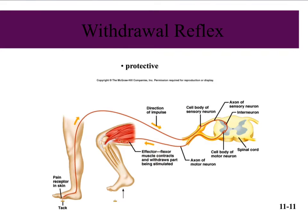Here is another example of a withdrawal reflex. They're designed to protect us from tissue damage. We see a sensory receptor in the skin — a person stepping on a tack — which triggers that receptor to send an impulse to the spinal cord. The spinal cord has one interneuron present, and then we quickly send the impulse on a motor neuron out to the leg muscles to pull that leg out of the way.